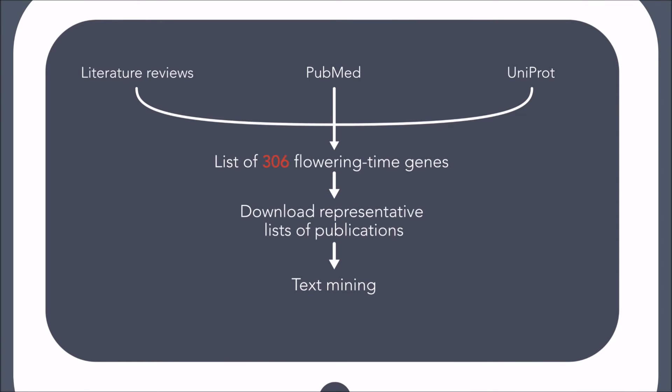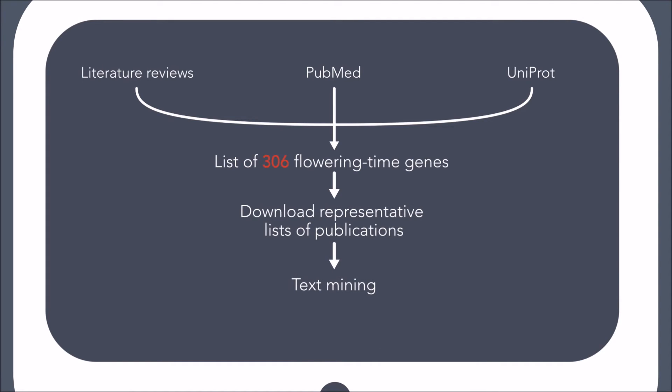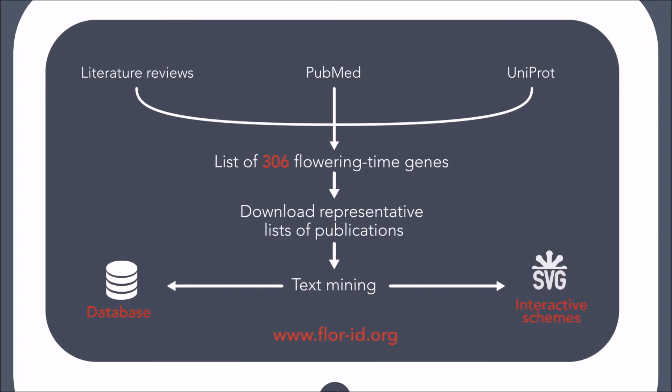So, how did we create FloraID? Well, with a lot of work. First, we read many literature reviews — more than 130. We collected comprehensive documentation in PubMed and used other databases such as UniProt and TAIR. Together, we used the collected data to create a list of 306 flowering time genes. For each of them, we downloaded a representative list of publications, about 3,000 in total. We used a text mining software to create both a database of flowering time genes and interactive schemes. These two types of data were combined into a freely accessible website: www.flor-id.org.